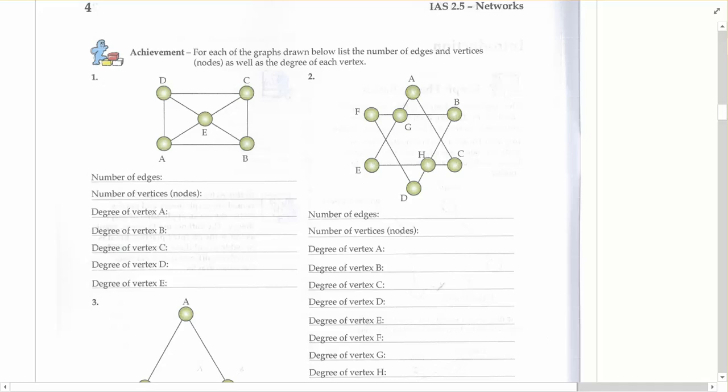So just to do this first one as an example, what we're asking is just to document some of the information about a particular network. So the number of edges on number one would be one, two, three, four, five, six, seven, eight. It can be helpful to mark them off as you go to make sure you've actually counted them all.